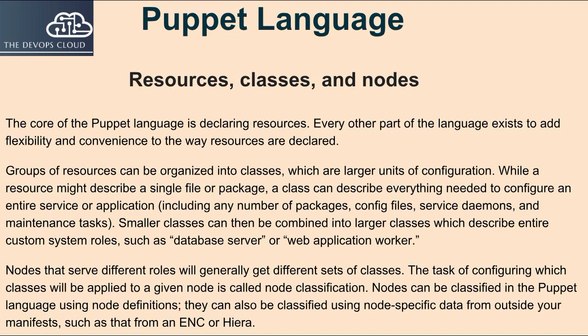Nodes that serve different roles will generally get different sets of classes. The task of configuring which classes will be applied to a given node is called node classification. Nodes can be classified in the Puppet language using node definitions. They can also be classified using node-specific data from outside your manifests, such as that from an ENC or HIERA.